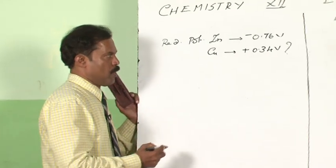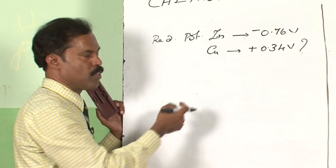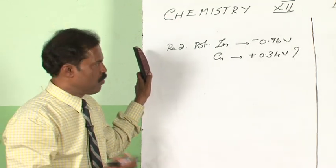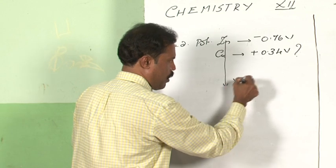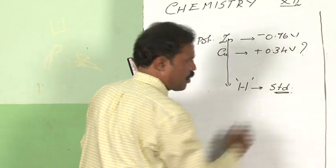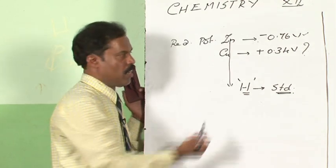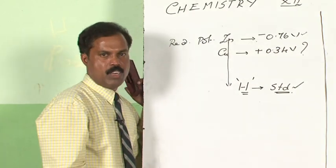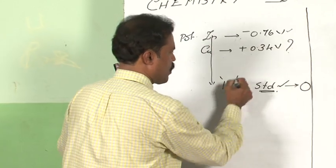The reduction potential value, as you understood, is the tendency of a metal to get reduced. Now, a metal cannot get reduced unless there is something to get oxidized as well. So what we do is compare the tendency of zinc to get reduced with respect to another metal. We consider hydrogen as the standard. This value represents the tendency of zinc to get reduced with respect to hydrogen, and this value represents the tendency of copper to get reduced with respect to hydrogen. The reduction potential value of hydrogen is taken as 0.